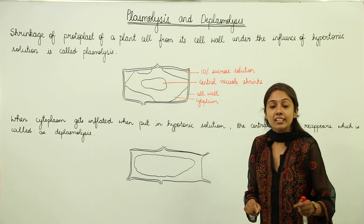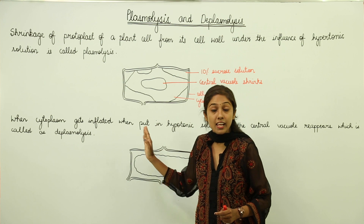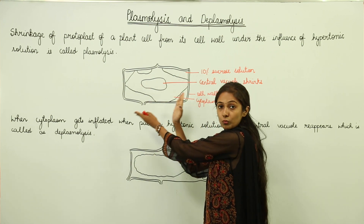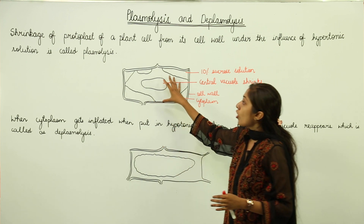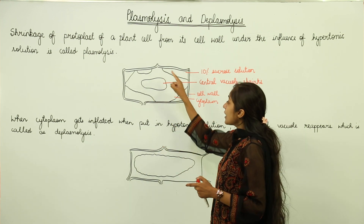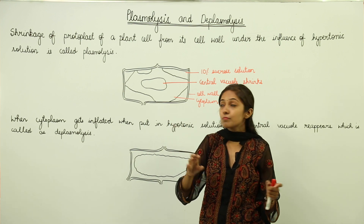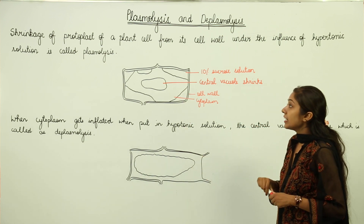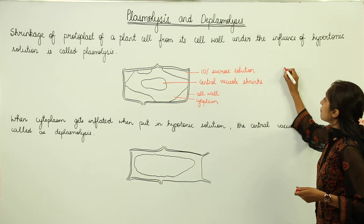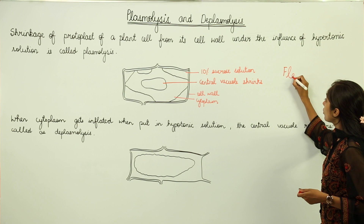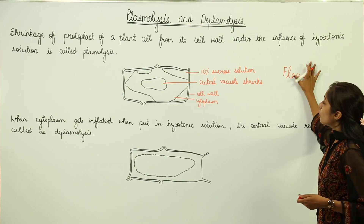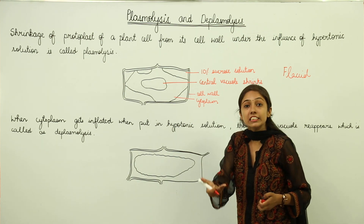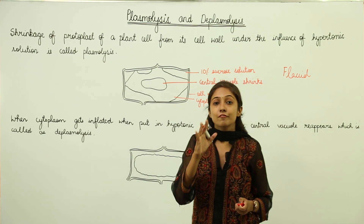This cell is known as a plasmolyzed cell because the water molecules have moved out, leading to shrinkage of the protoplast and shrinkage of the cytoplasm — the cytoplasm has left the cell wall. This type of cell is also known as a flaccid cell, and this process is also called flaccidity.